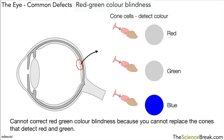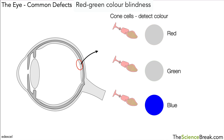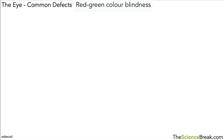So this is the final common eye defect that we have looked at. We looked at long sightedness and short sightedness, we looked at cataracts, and this is red-green colour blindness. Thanks for watching and I'll see you soon.